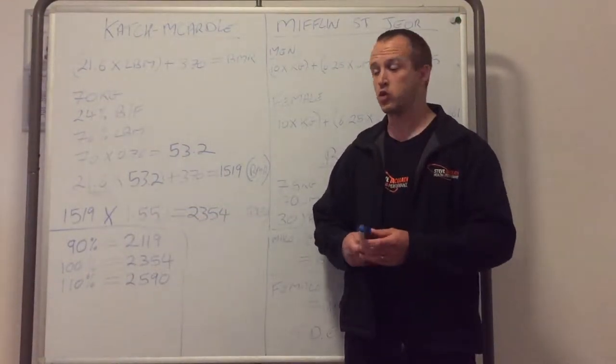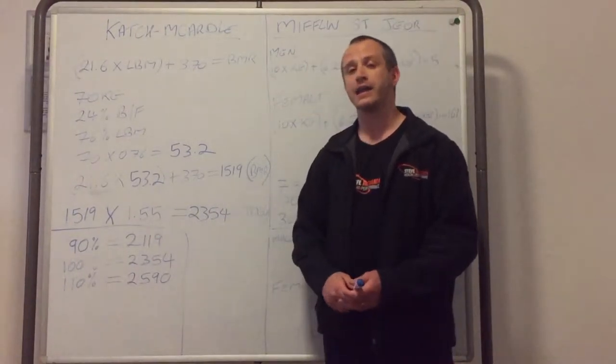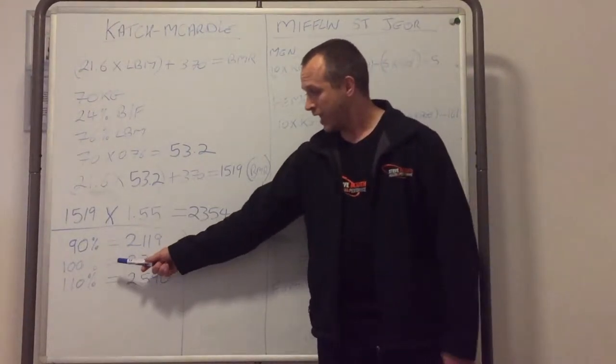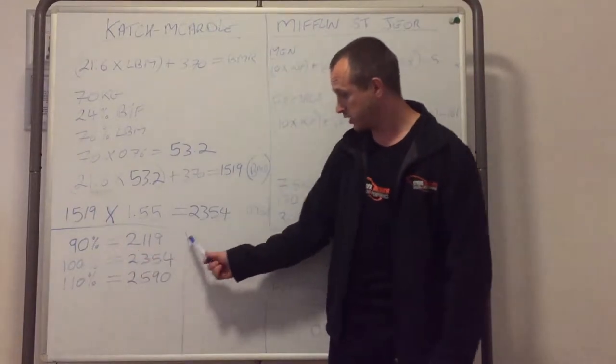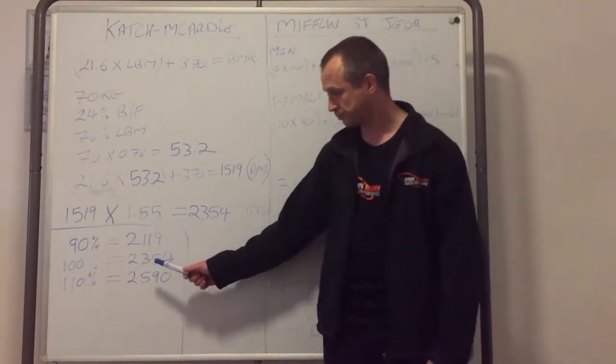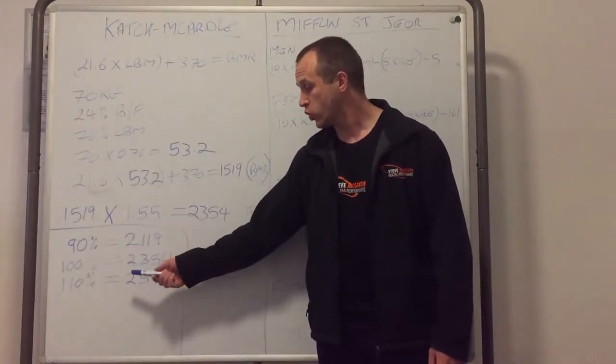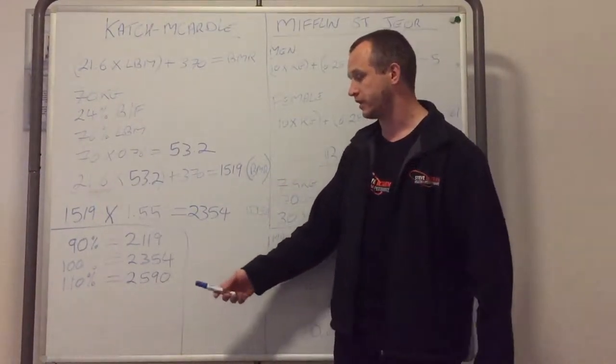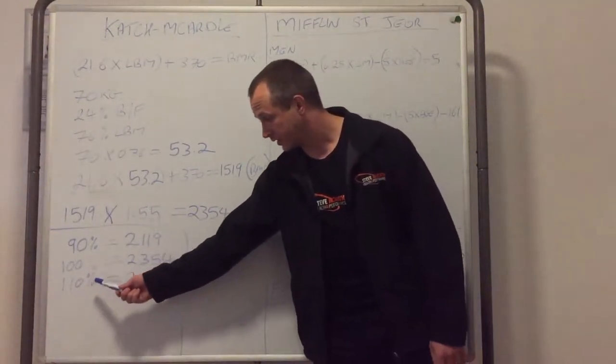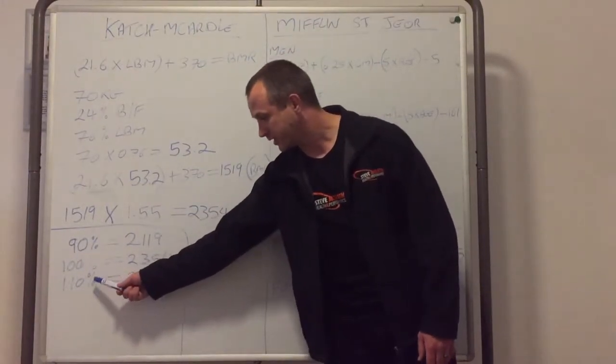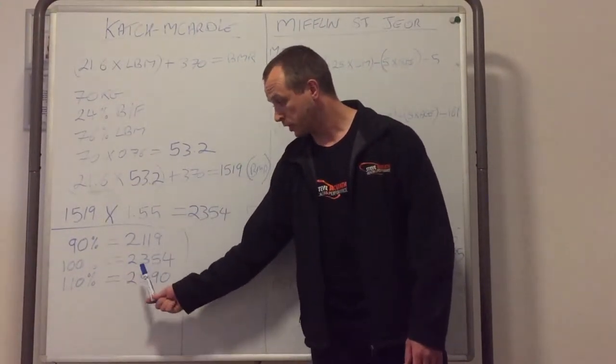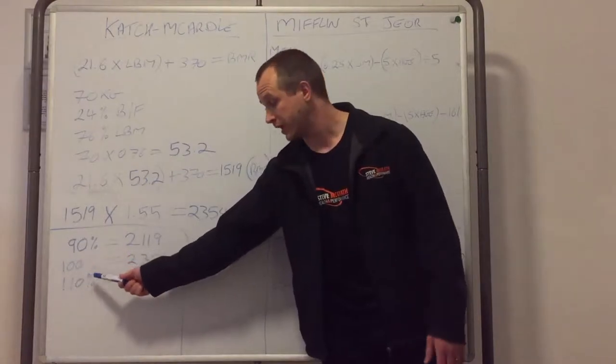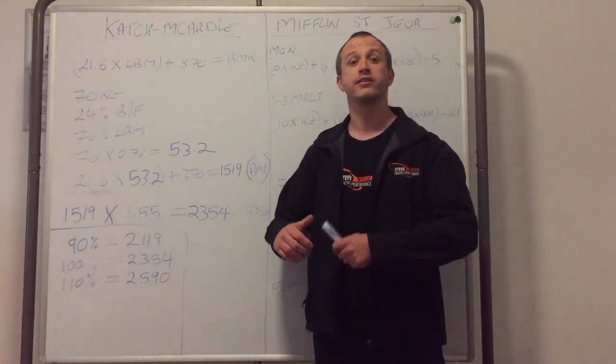If you want to be more aggressive, you can multiply by 85% for a 15% deficit, or by 80% to get a 20% deficit. If you want to maintain your weight, you just keep 100% and keep eating this. And then if you want to add weight, you would increase your maintenance calories by 10%, 15%, or 20% depending on how quickly you want to put weight on. For instance, if we want to increase this by 10%, we would multiply 2354 by 110%, and we would get 2590 to start putting weight on.